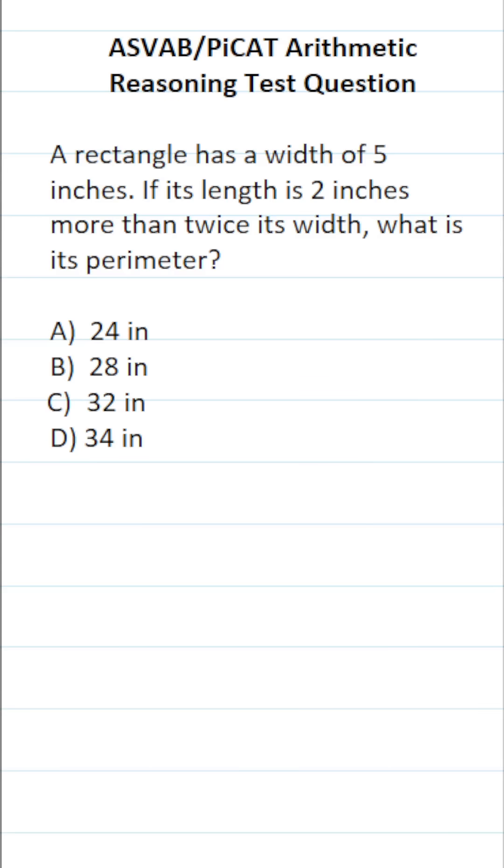Again, as a reminder, on the actual ASVAB and PiCAT, you're not permitted to use a reference sheet. So you have to know some basic formulas, including how to find the perimeter of a rectangle.